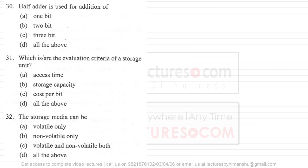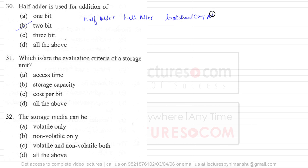Question number 30 says the half adder is used for the addition of two bits of information. We have different kinds of adders: half adder, full adder, look-ahead carry adder, and ripple carry adder, or serial adders.